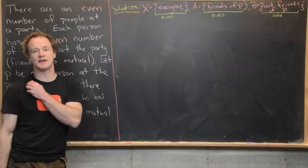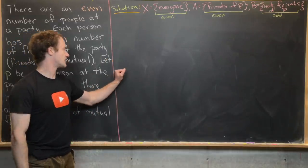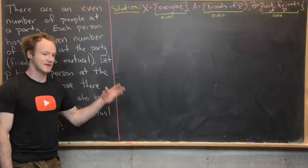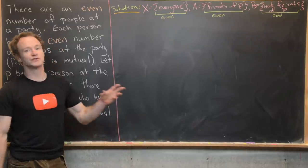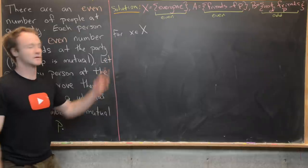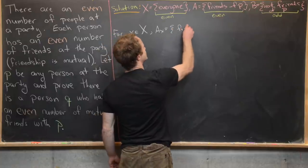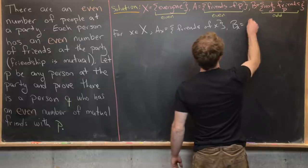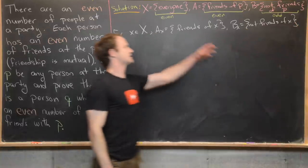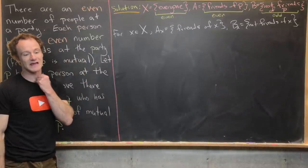So far: X is everyone at the party with an even number of elements; A is all friends of P with an even number of elements; and B is the people who are not friends of P, with an odd number of elements — that's what we just proved. Now we'll introduce more notation. For an arbitrary person at the party, little x, let A sub x be the friends of x, and B sub x be the non-friends of x.